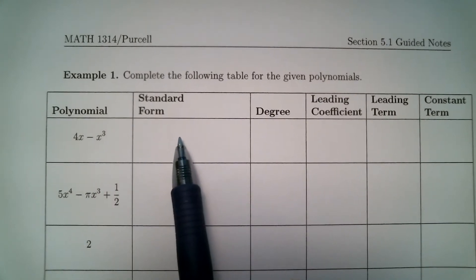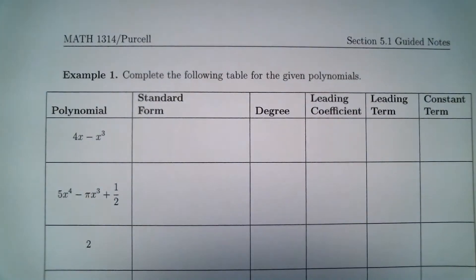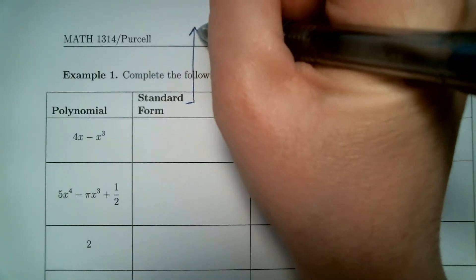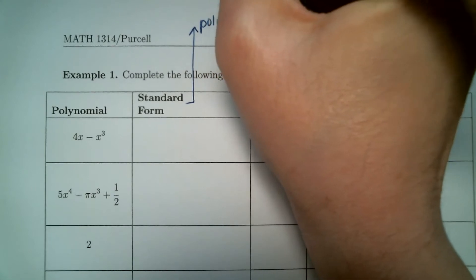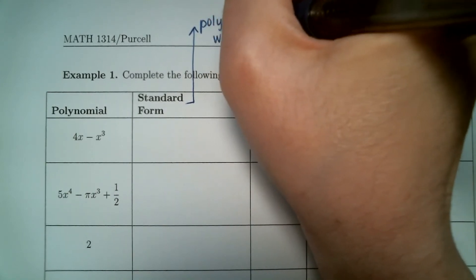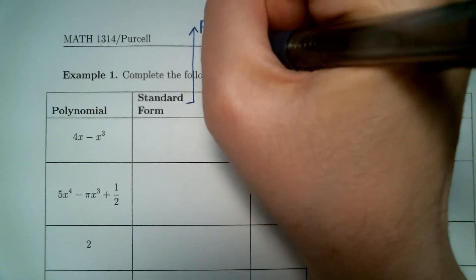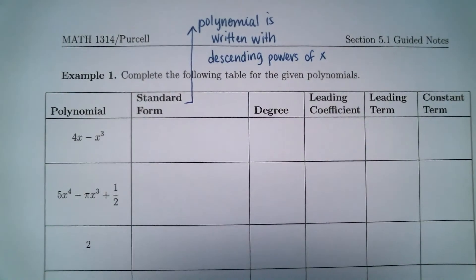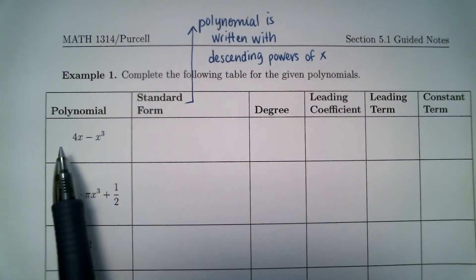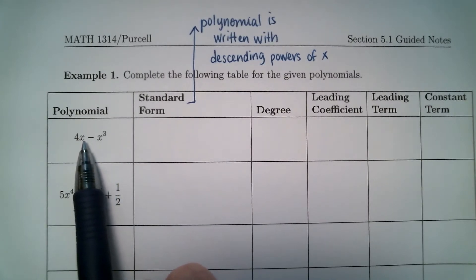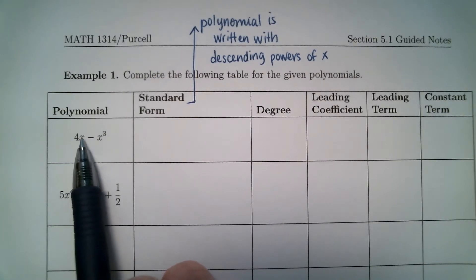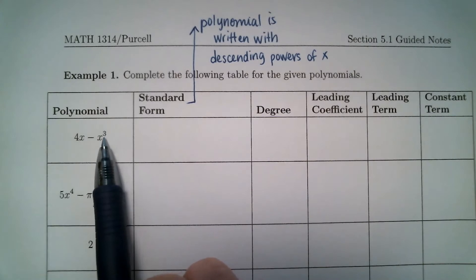This is a polynomial because we are adding or subtracting powers of x, and we do not have any of the bad stuff — no negative powers, fractional powers, square roots, cubed roots, fractions with x in the denominator, or absolute value. Standard form means that the polynomial is written with descending powers of x, so the powers of x go down as you go from left to right.